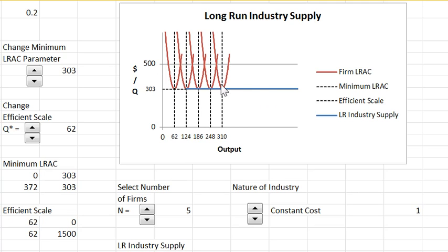One, two, three, four, five. What happens here, I draw these vertical lines at the efficient scale of the firm and I treat that as a new axis, and then I draw the next firm's average cost curve starting from that axis and keep on going that way.